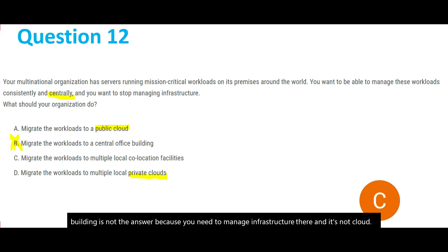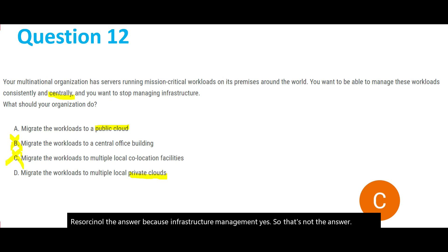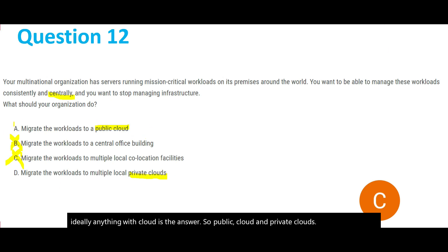Option C, migrate the workloads to multiple local co-location facilities, is also not the answer because of infrastructure management requirements. Ideally, anything with cloud is the answer — public cloud or private cloud. So out of these two, A is our answer: migrate the workloads to a public cloud.